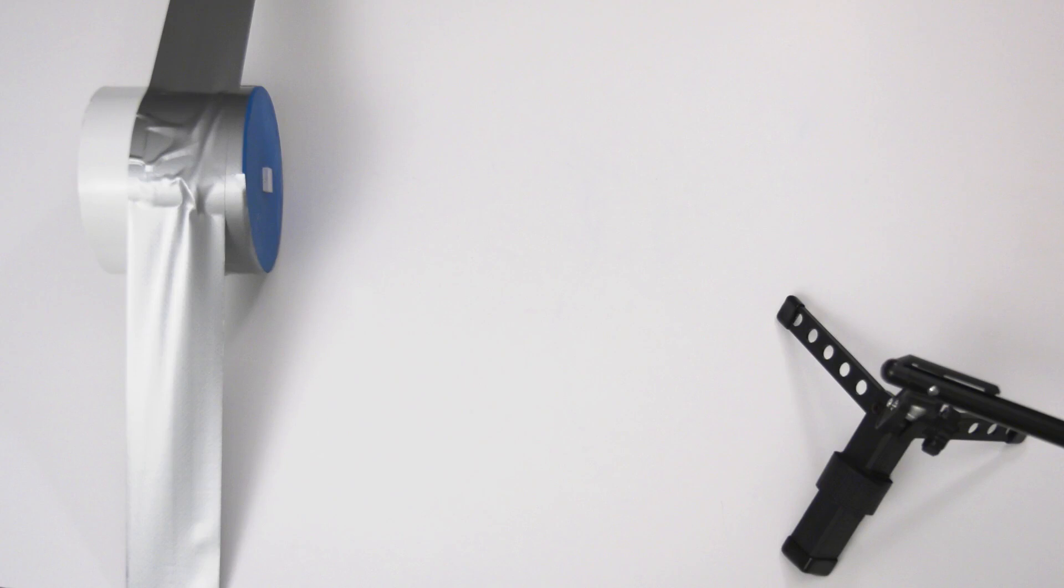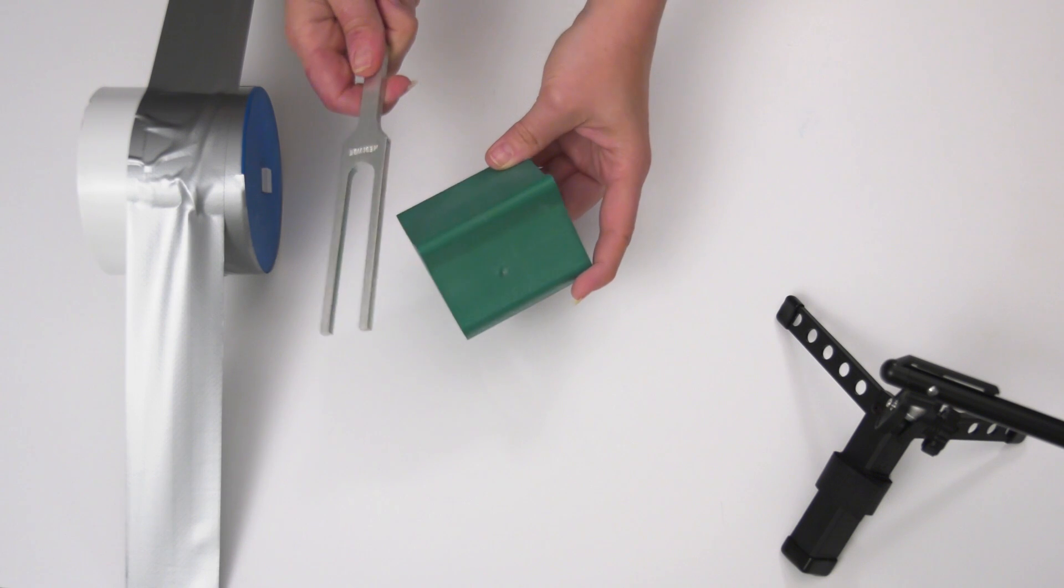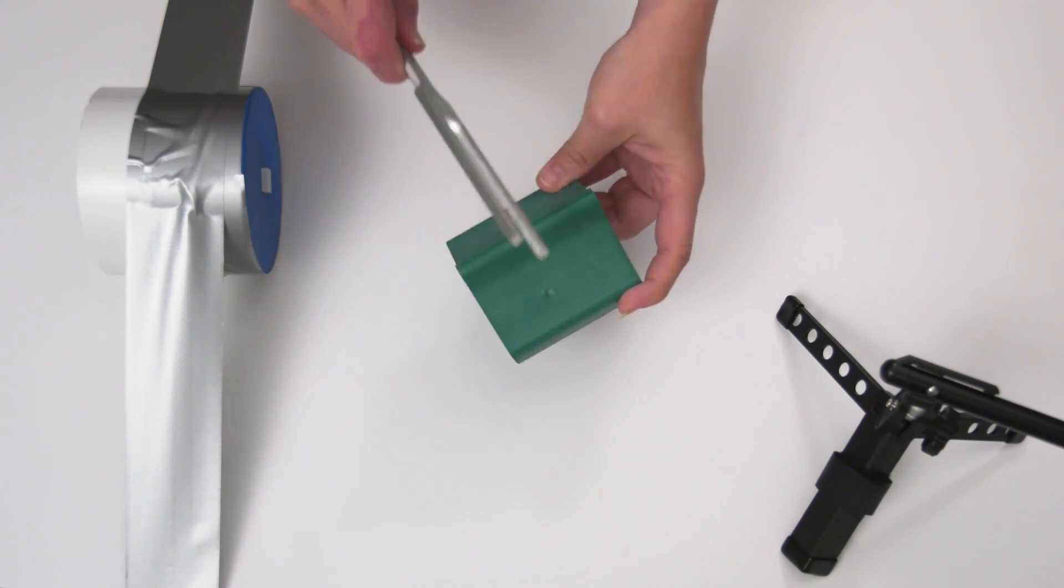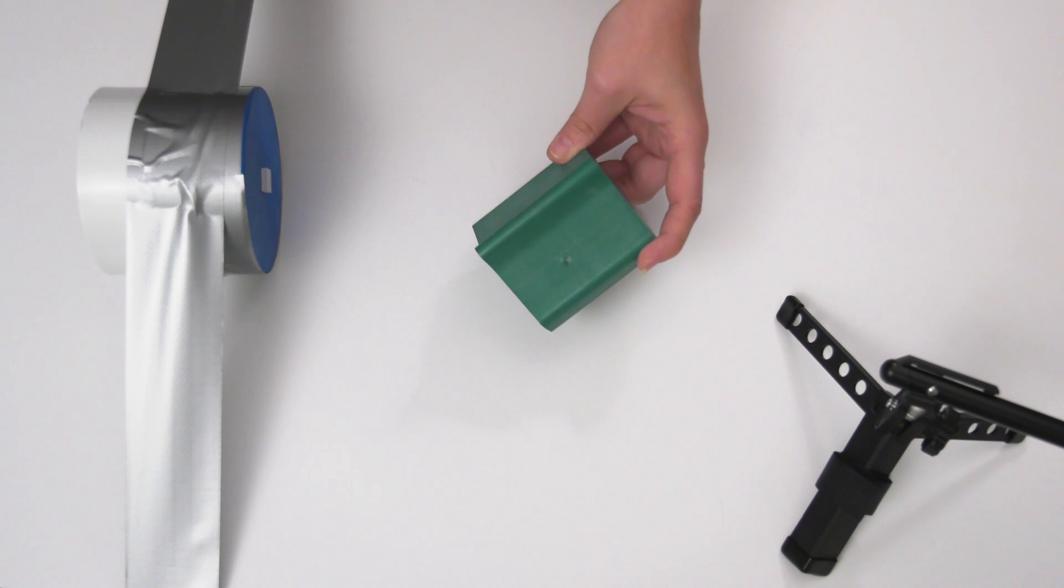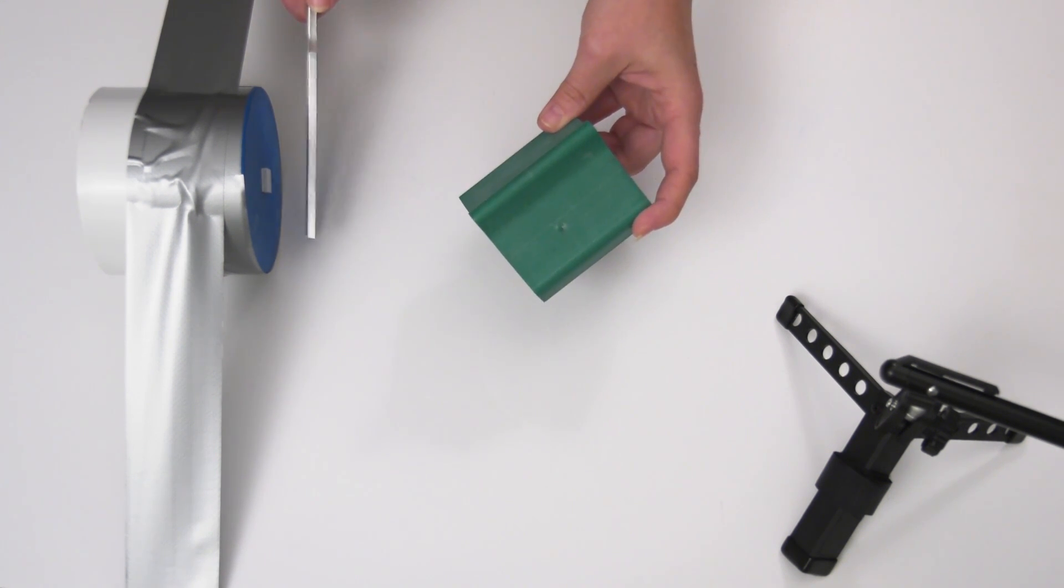Lastly, see what happens when you use a tuning fork to create a sound. To do this, strike the fork firmly on the activator to start it vibrating. Then, place it gently against the skin of the balloon. Notice the shape this sound makes compared to the other examples.